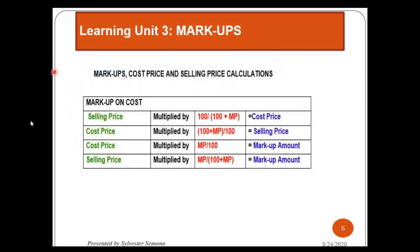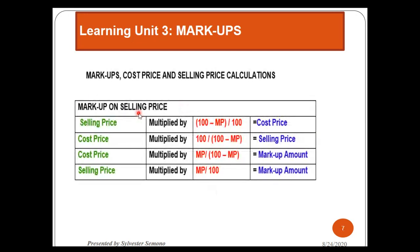If you don't want to use the method I used before, you can also use the formulas, though I don't prefer memorizing them. For markup on cost: if you want to find the cost price, take the selling price and multiply it by 100 over (100 plus MP), where MP stands for markup. If you have been given the cost price and want to calculate the selling price, multiply the cost price by (100 plus MP) divided by 100. And if the markup is on selling price, I gave you the other way of calculating — it is up to you.